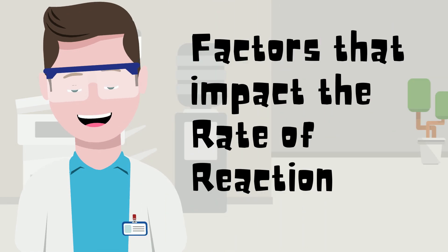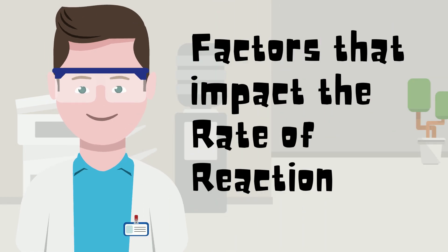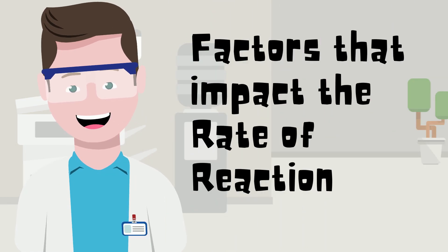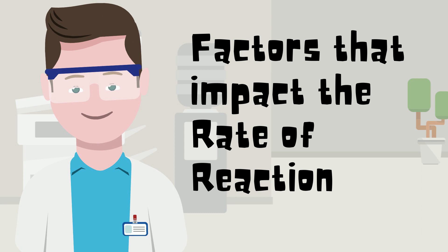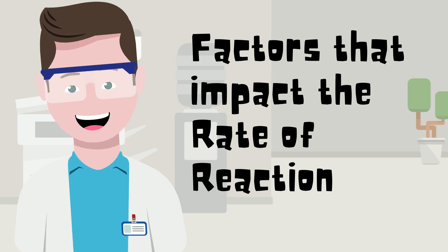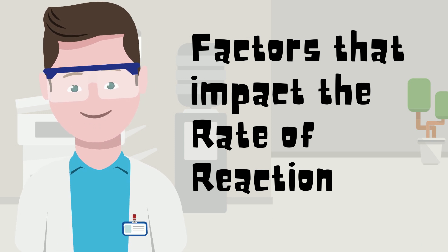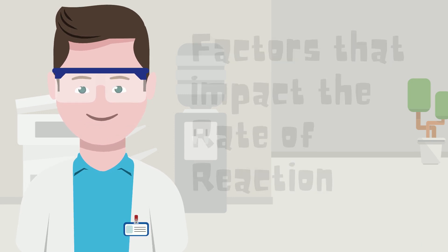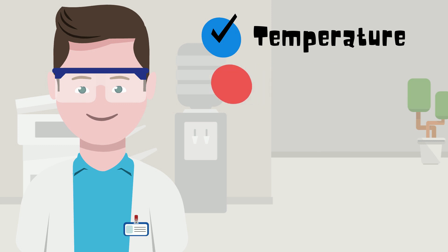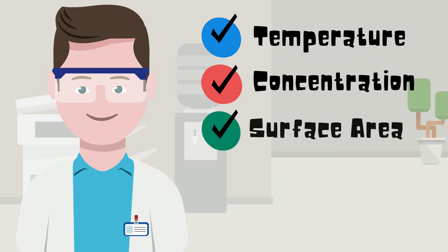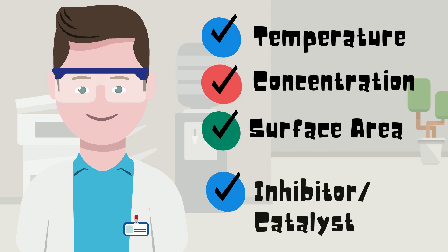So what are some of the factors that affect the rate of reaction? There are generally four factors that impact this rate of reaction: temperature, concentration, surface area, and either an inhibitor or a catalyst.